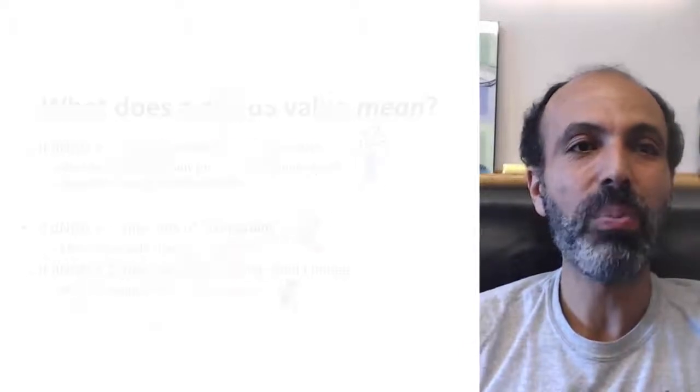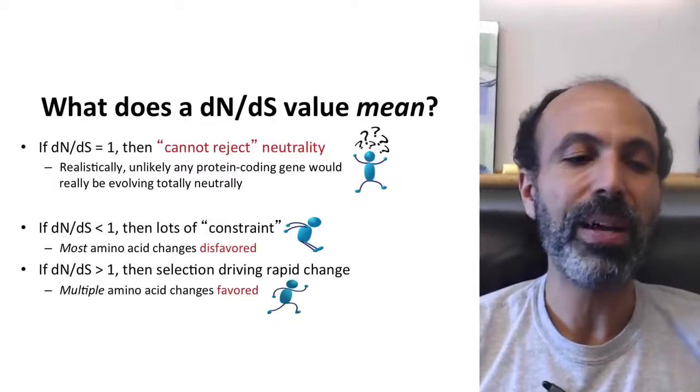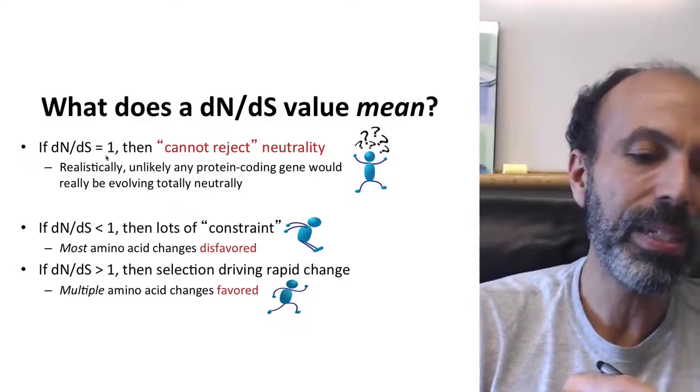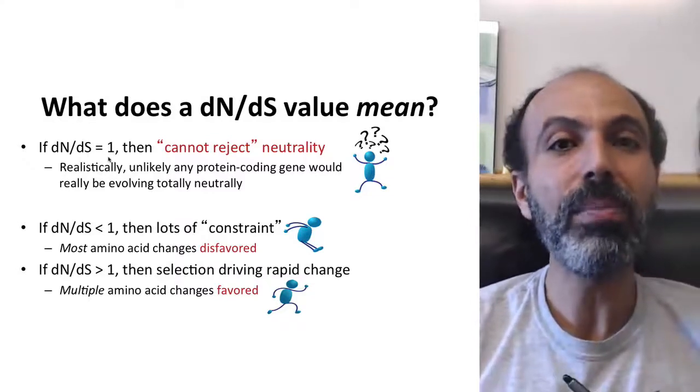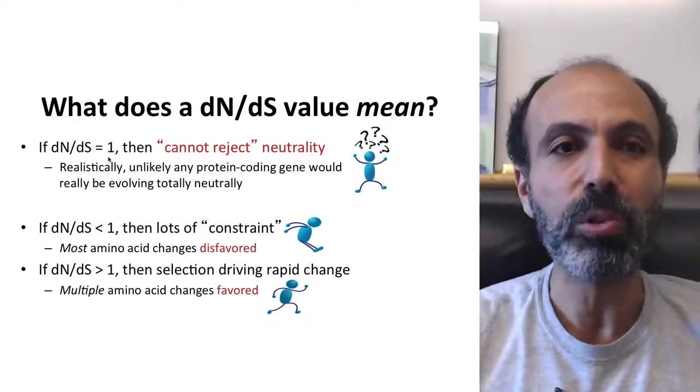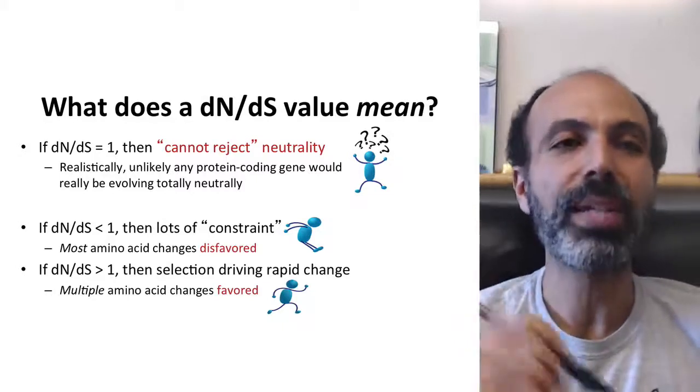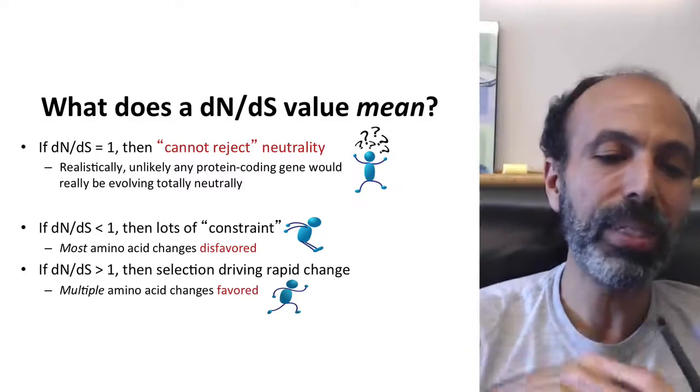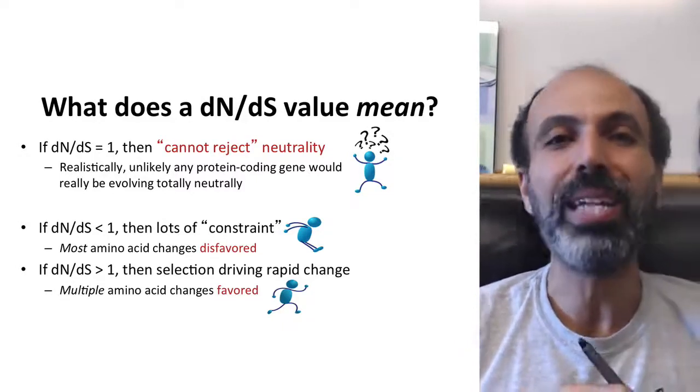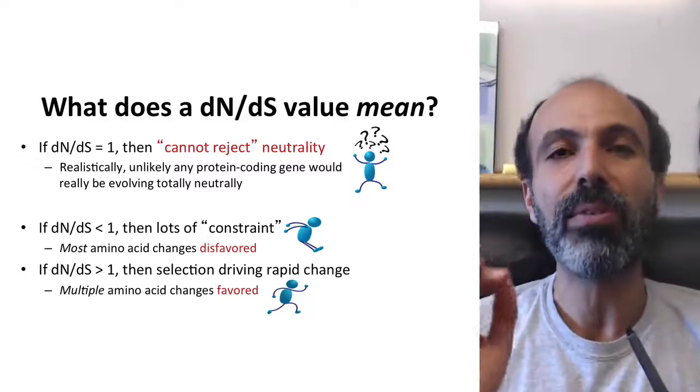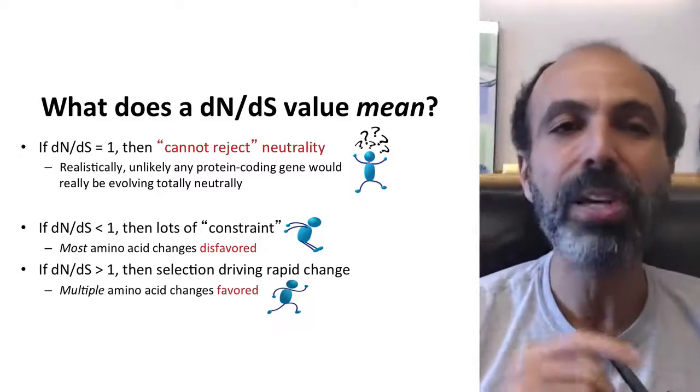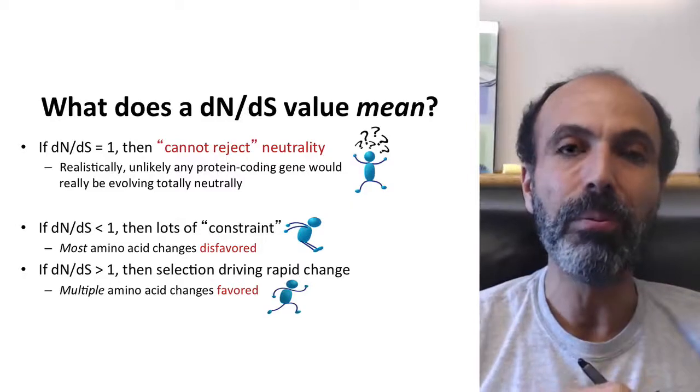But this comes back to this broader question of what these dN/dS values mean. That essentially, if you have a dN/dS value of one, that doesn't mean the gene is actually evolving neutrally. It means you cannot reject neutrality. And in fact, realistically, it's unlikely that almost any protein-coding gene would be really evolving totally neutrally. It's very improbable. It could happen, but it's very improbable.